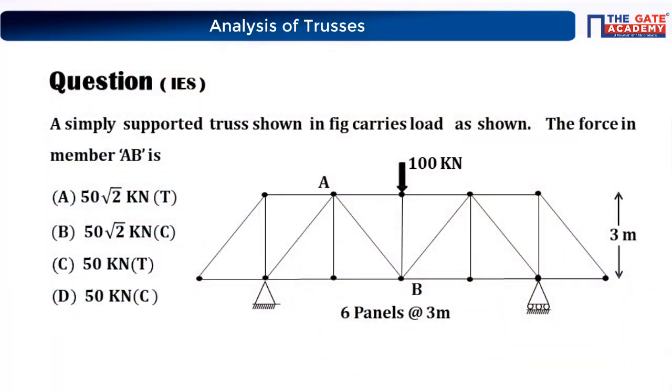I hope everything is clear. We will now solve two more questions and then move into methods of structural analysis. The first question is an IES question: a simply supported truss carries a load of 100 kilo-newton applied at the center. Find the force in member AB. Options are given. Please try to solve it.